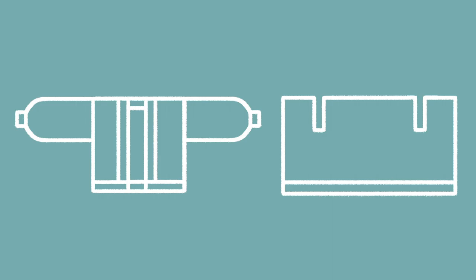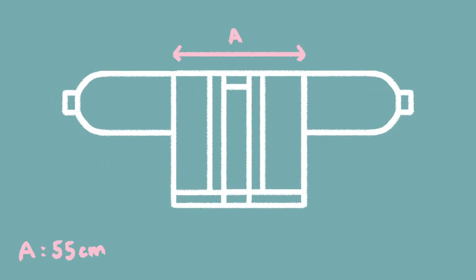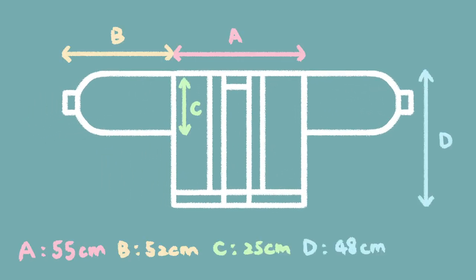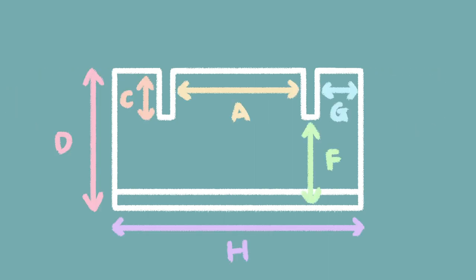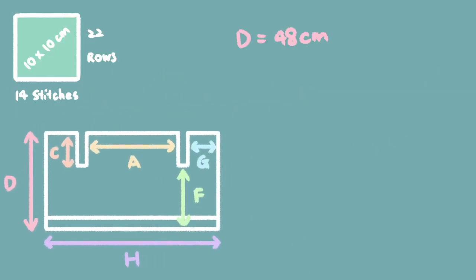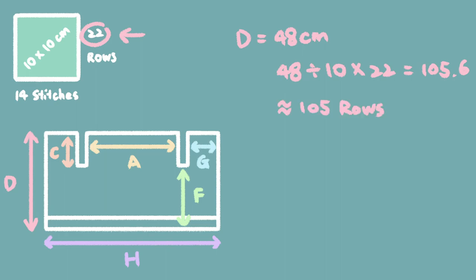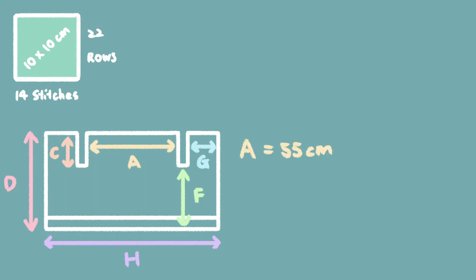After knitting the swatch, measure your gauge by counting the V-shapes — each V is one stitch. My gauge was 14 stitches by 22 rows per 10cm. This will vary depending on your needle size and yarn weight. Then we can start calculating garment dimensions. Since this was my first serious sweater, I was nervous about miscalculating, so I mostly referenced CoolStitches' data. She found a similar-shaped garment to measure, and I followed her method to draw a measurement diagram.